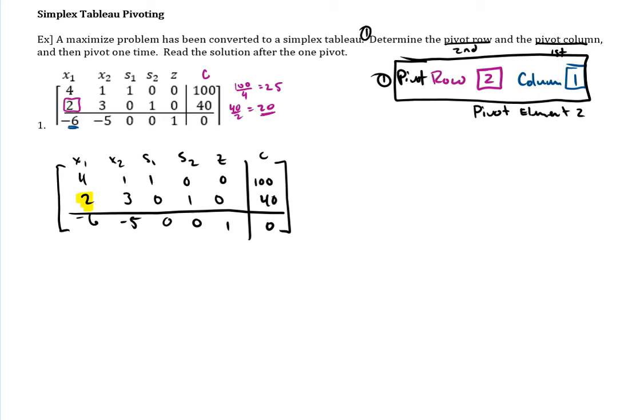Since I've already scribbled on that, I am going to rewrite it. So x1, x2, s1, s2, z. And then 4, 1, 1, 0, 0, 100. There's my constant. Let me label that. 2, 3, 0, 1, 0, 40. And then negative 6, negative 5, 0, 0, 1, 0. All right, so I'm just rewriting it. And then we know where we're pivoting.